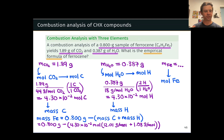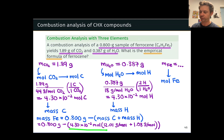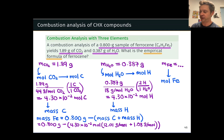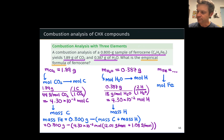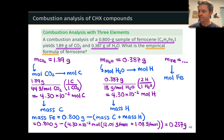The mass of iron equals the total mass (0.8 grams) minus the sum of the mass of carbon and the mass of hydrogen. The mass of carbon is 4.3×10⁻² moles × 12.01 g/mol. Since the number of moles of hydrogen is also 4.3×10⁻² moles, we collect the molar mass terms — 12.01 for carbon and 1.008 for hydrogen — and subtract both from 0.8 grams. As it turns out, this gives us 0.237 grams for the mass of iron within this sample of ferrocene.